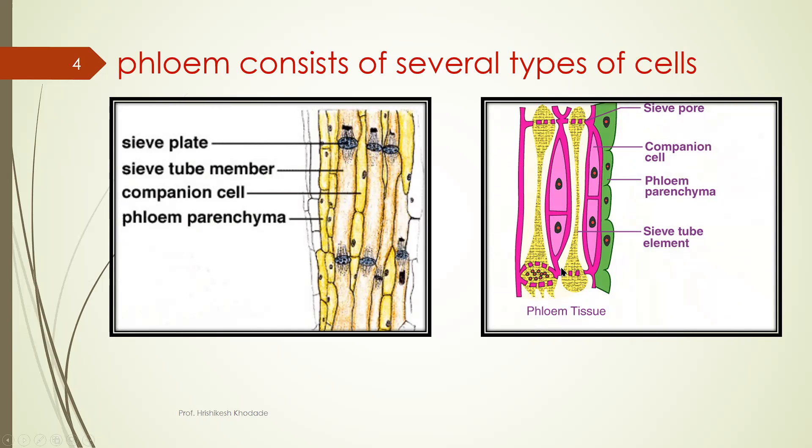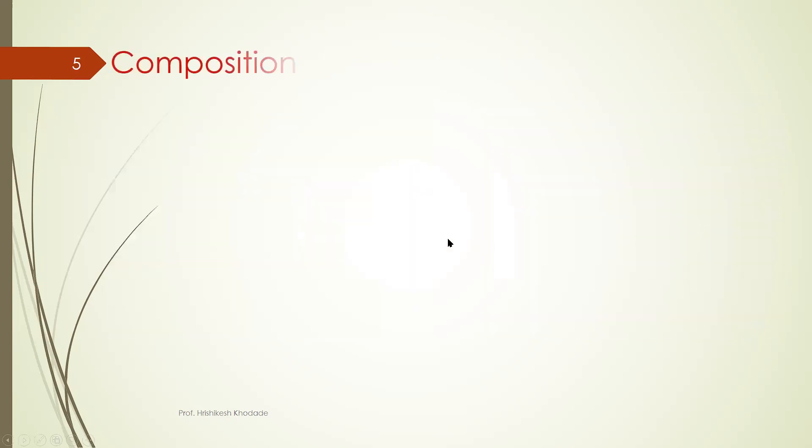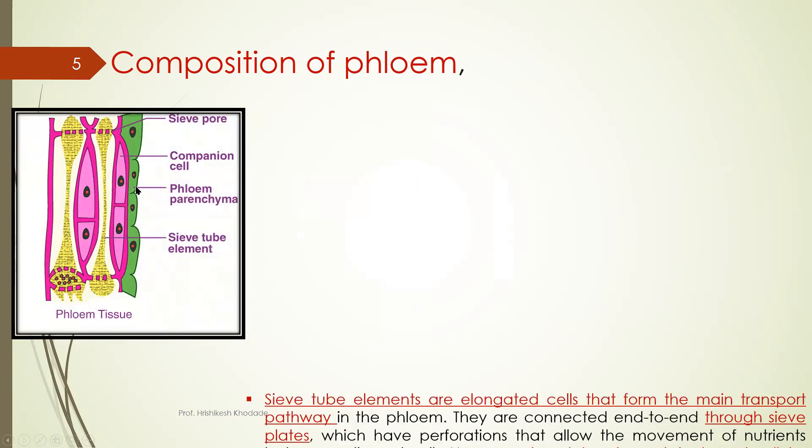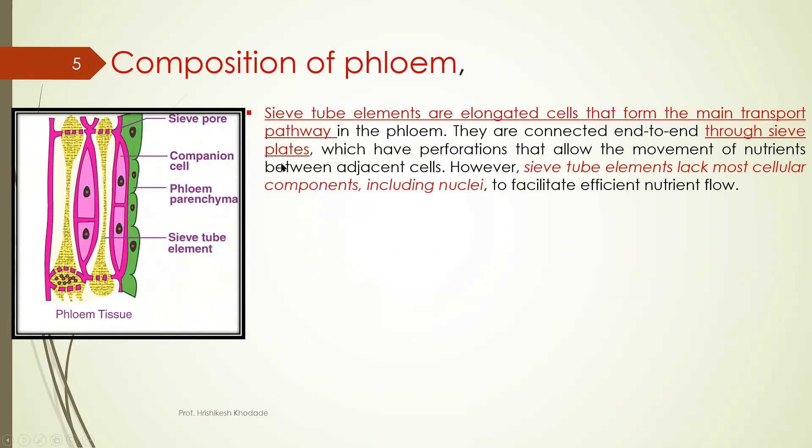So this is sieve plate here and this is your sieve element. This is companion cell phloem parenchyma. So composition of phloem, you have understood that it consists of various different types of cells.